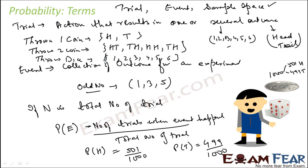If you throw three coins, you may get outcomes like head-tail-tail, tail-tail-tail, tail-tail-head, head-head-head, and so on — you will have 8 outcomes. The sample space is the collection of all possible outcomes. The event is the one we are looking for. For example, if we are looking for the event of a head, we look for that specific outcome. If we are looking for the tail event, we look for that outcome.